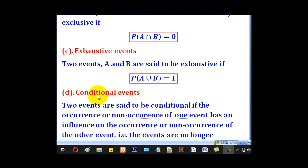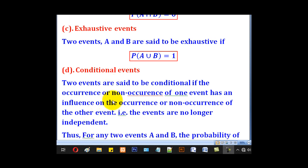The last event type is called conditional events. Two events are said to be conditional if the occurrence or non-occurrence of one event has an influence on the occurrence or non-occurrence of the other event — i.e., the events are no longer independent.